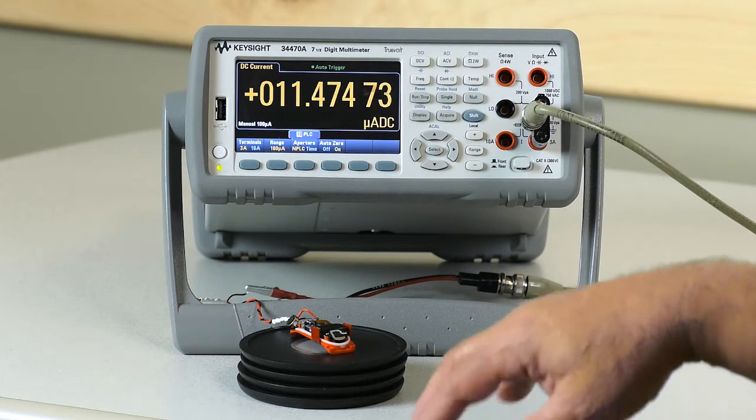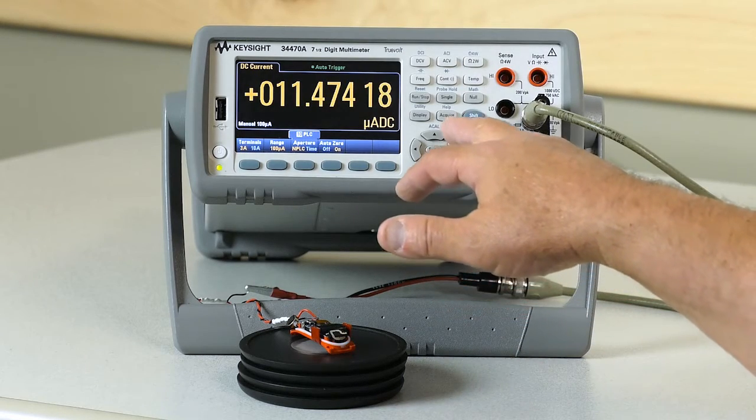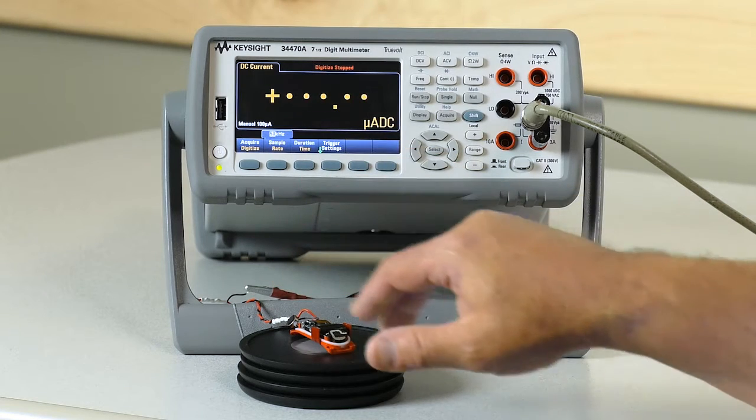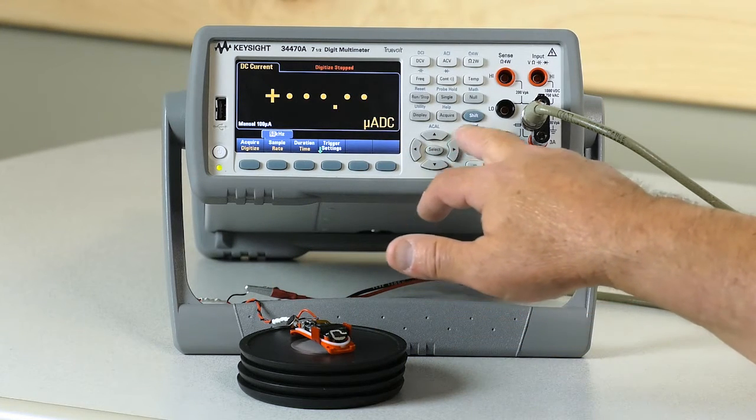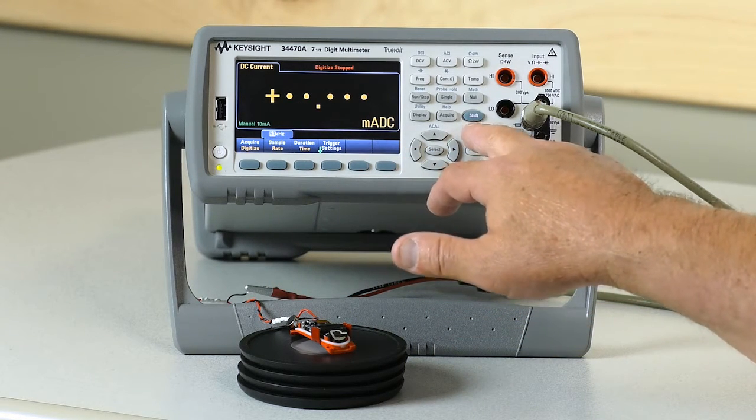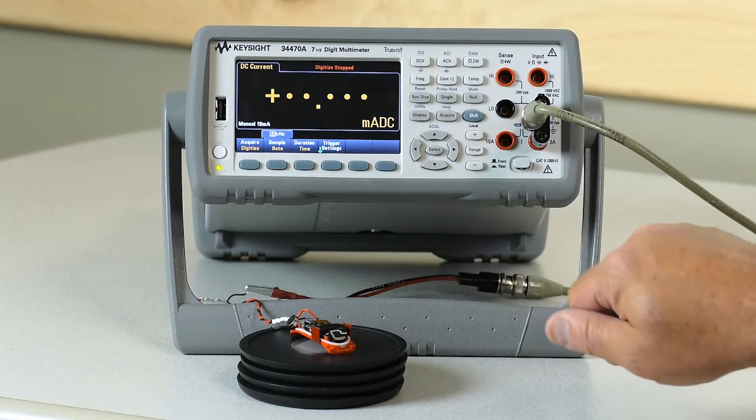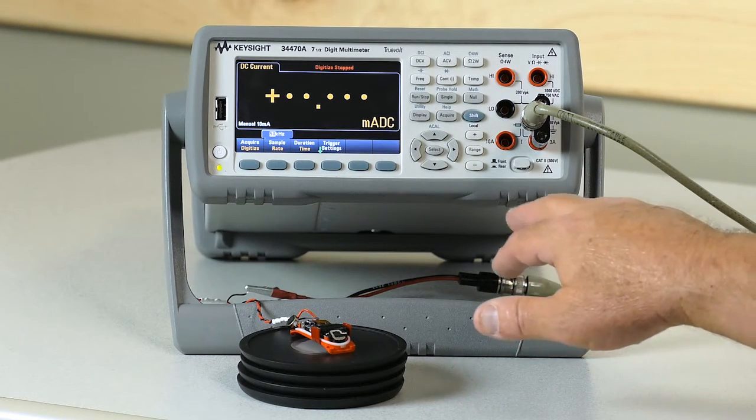So I'm going to switch the digital multimeter into a digitizing mode, hitting acquire. Instead of continuous I say digitize. I'm going to range up a little bit and then it has placed the multimeter into a bunch of special modes to allow it to acquire quickly.